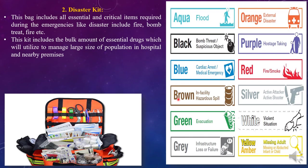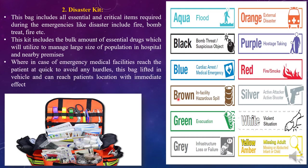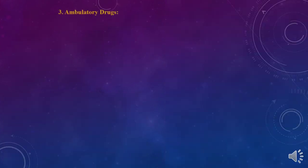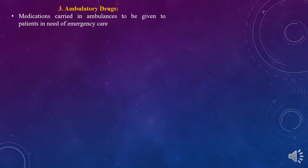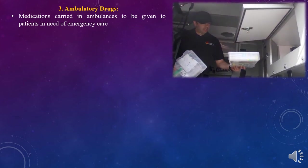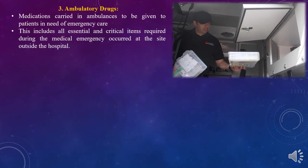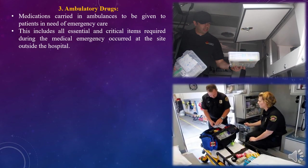The disaster kit contains bulk amounts of all essential drugs used to manage a large population in the hospital or nearby premises where the event occurs. In case of emergency, the medical facility reaches the patient quickly to avoid any hurdle — this kit is lifted onto a vehicle and reaches the patient location with immediate effect. Ambulatory drugs are the third section of the non-floor stock system. These are medications carried in ambulances to be given to patients in emergency cases, available at all times inside ambulances, especially cardiac ambulances.